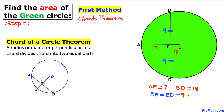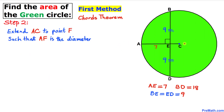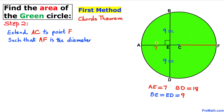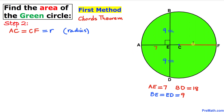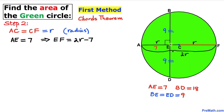So BE equals ED equals 9 units. In the next step, let's extend this radius AC to another point F on the circle such that AF is the diameter. We call radius CF as R, and AC as R as well — both are radii. So the full diameter is 2R, and therefore length EF is 2R minus 7.